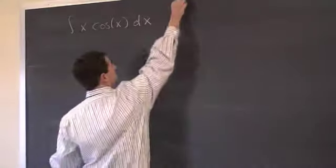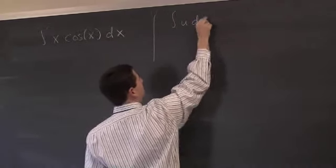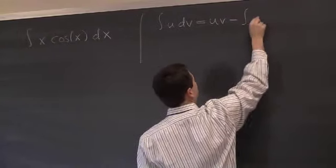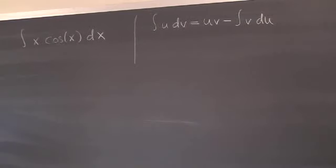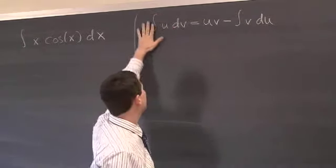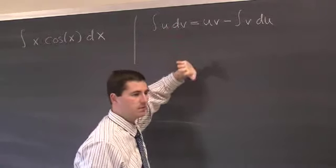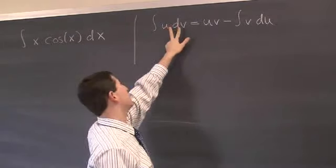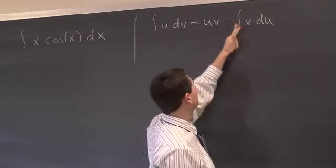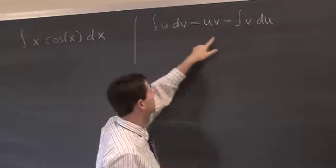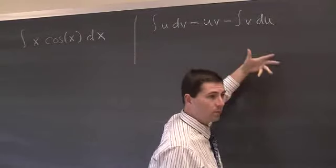Recall, when we do integration by parts, we're trying to utilize this formula: the integral of u dv is uv minus the integral of v du. So what you try to do is set up your inside function so it looks like some function times another function times dx, where that function times dx is your dv, and the other function is u. Then you can switch the roles of u and v, and you'd get a new integral which in principle could be easier.